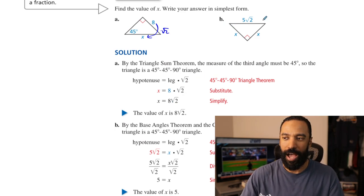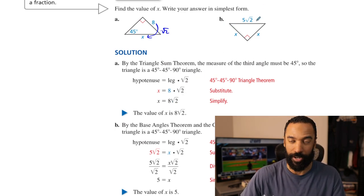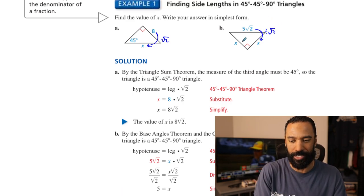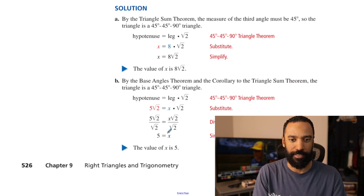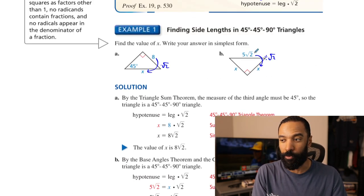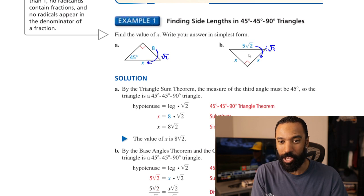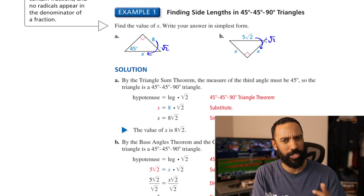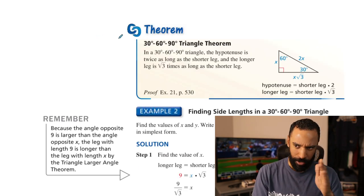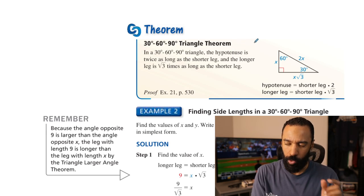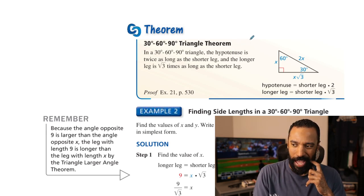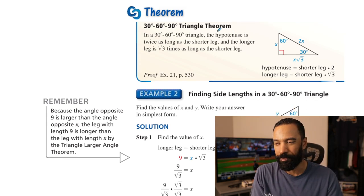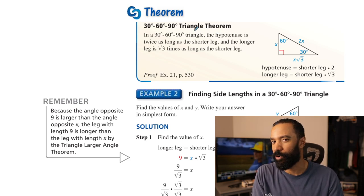Will we always get root 2s this conveniently? Probably not. But that's the 45-45-90 triangle. Now there's another one called the 30-60-90 triangle.